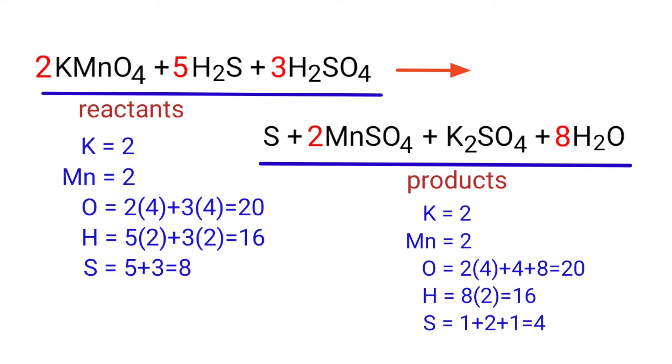Now we need to balance the hydrogen atoms. To do this, we need to put a coefficient of five in front of H2SO4.